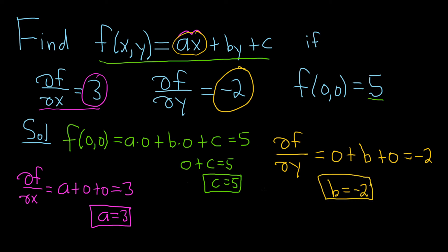So now that we have a, b, and c, we can plug them back into our function to get our answer. It's pretty cool. f(x, y) is equal to, so a is 3, so we get 3x. Kind of a nice problem. Minus 2y, and then c is 5. And that would be the linear function of two variables that satisfies these conditions.